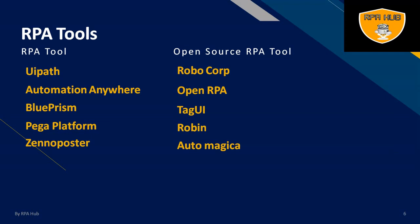Let's move to RPA tools. Various RPA tools are available. The top 5 tools in the market used by global organizations are: first, UiPath; second, Automation Anywhere; third, Blue Prism; fourth, Pega Platform; and fifth, NICE (also known by other names), which is globally used.